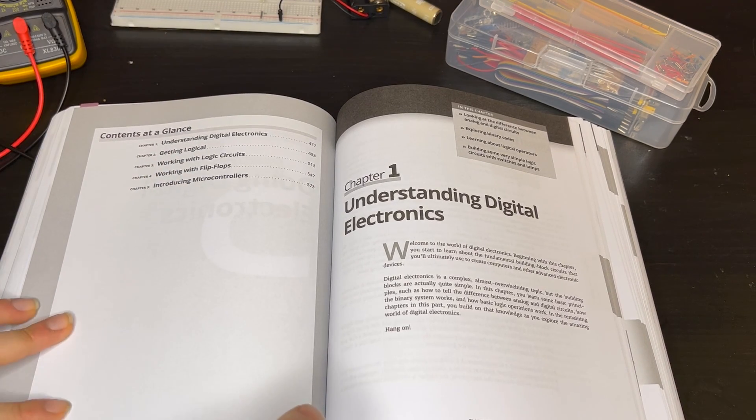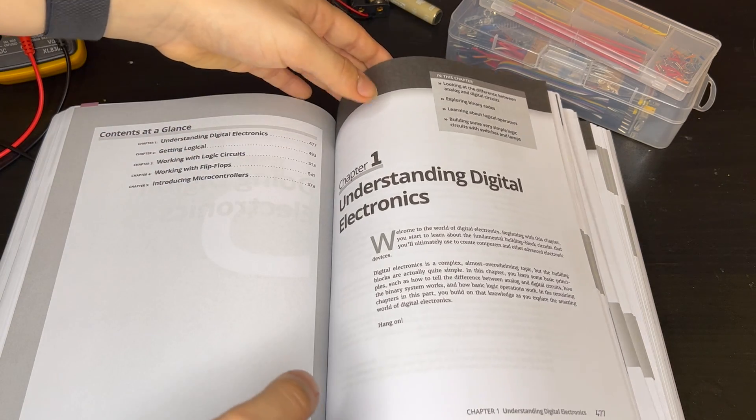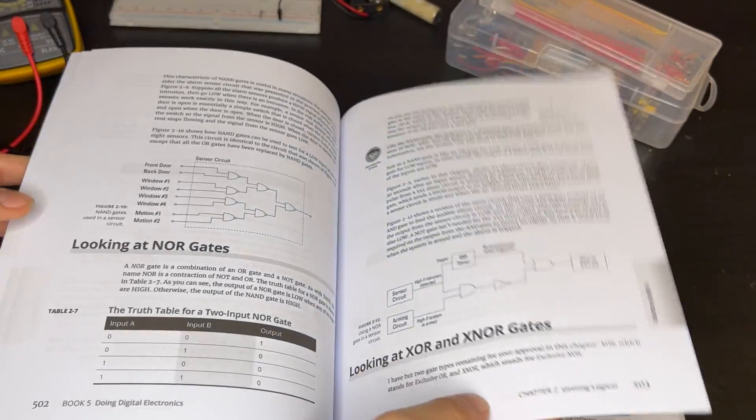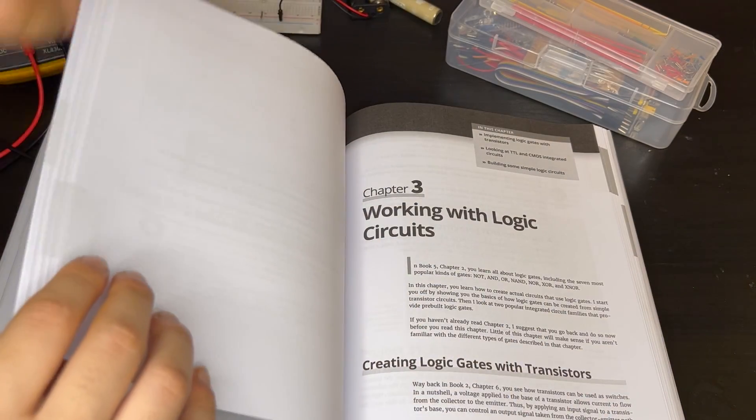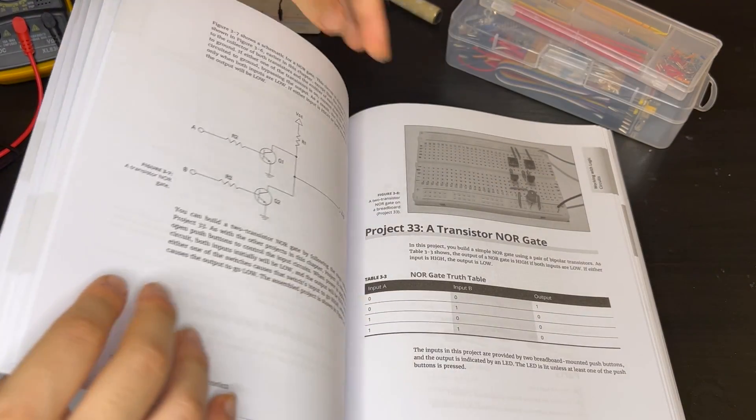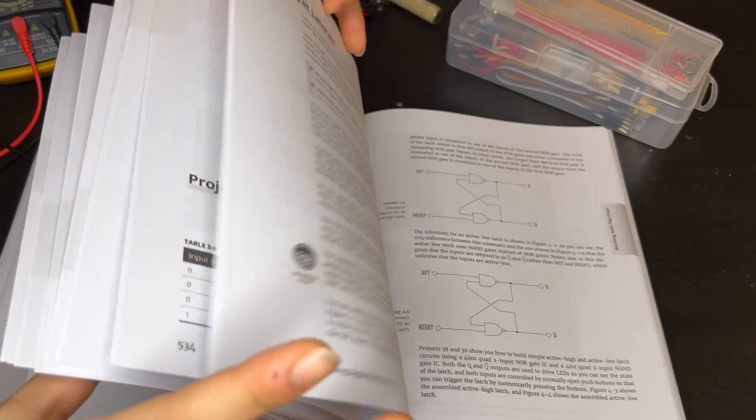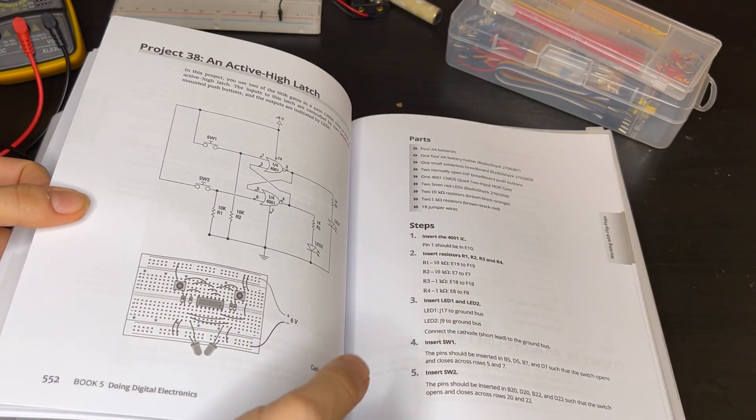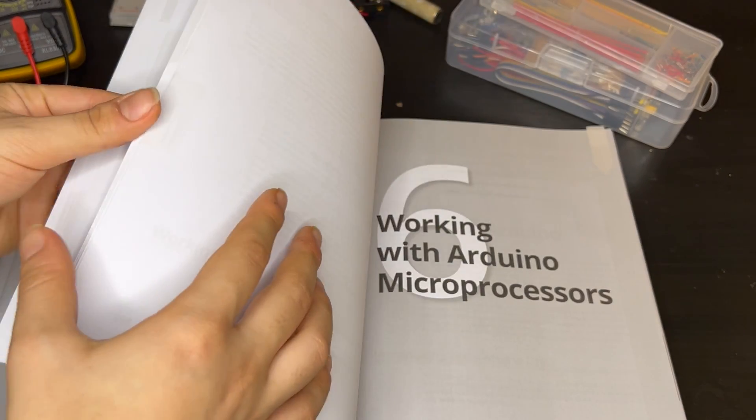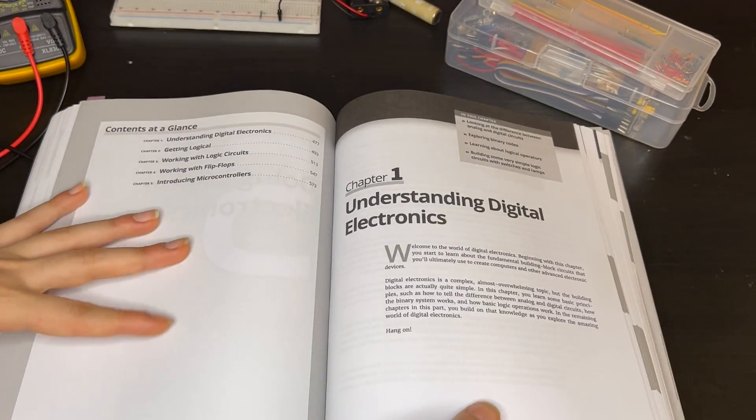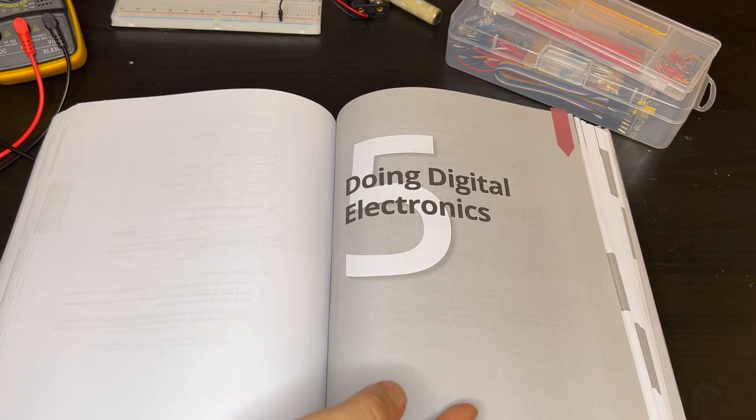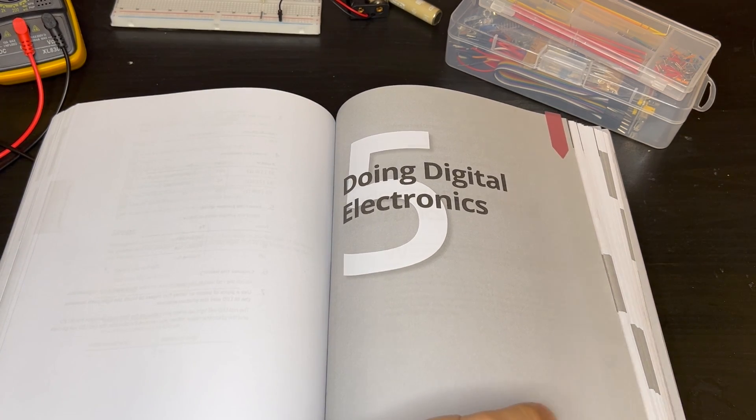But this book was something new to me. I didn't know how digital electronics work. It just made total sense—the use of transistors to do digital electronics, logic gates. I learned all of this from this book. At the end, it talks about flip-flops. Book Number Five was really great because I learned something very new about digital electronics.